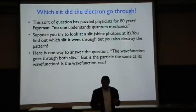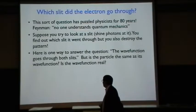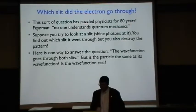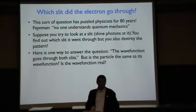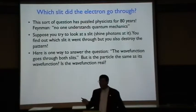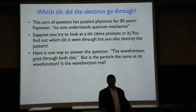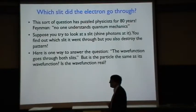You can ask the question, which slit did the electron go through? This question has puzzled physicists and philosophers for 80 years. It's a very strange thing that's happened. Feynman, one of the great experts in quantum mechanics of the last century, said no one understands quantum mechanics. Now that doesn't mean that we don't know how to calculate it and solve problems and predict experiments. We can do all that. We can do that very well. Feynman was the master.